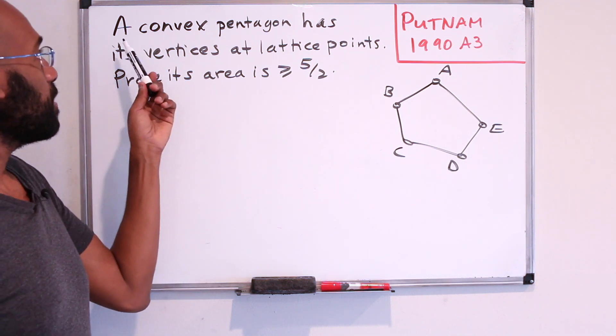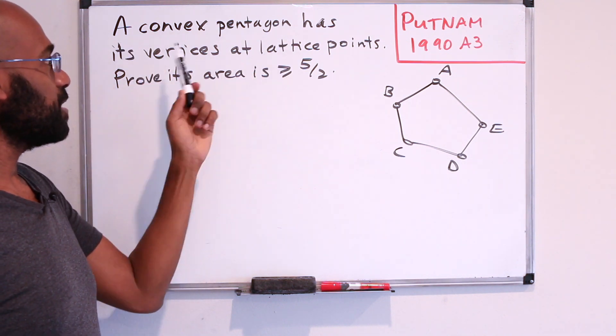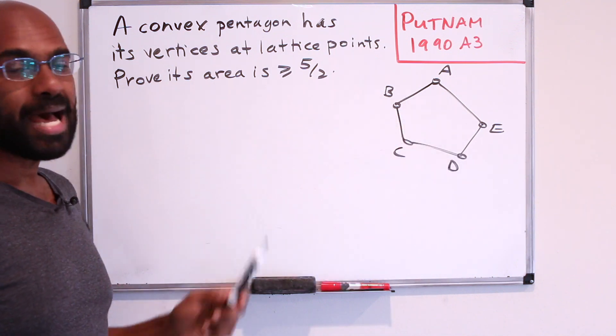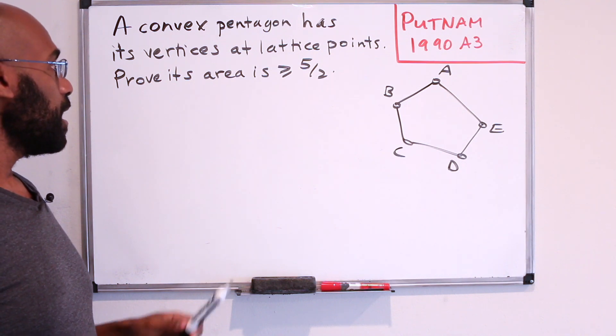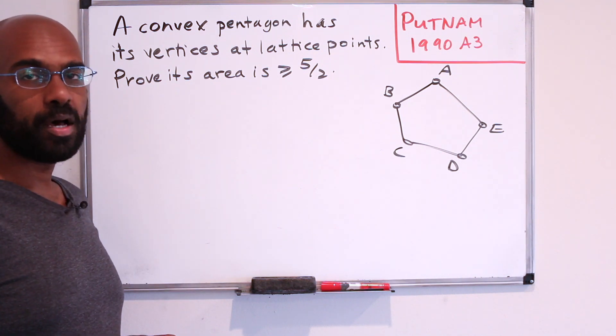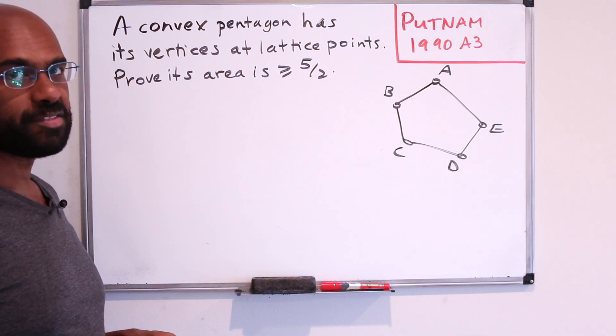So the statement is that a convex pentagon has its vertices at lattice points, meaning the components of the points are integers, and it asks us to prove that the area of the pentagon is forced to be at least 5 halves.